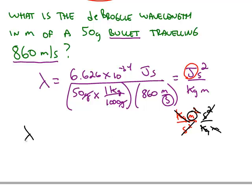We're left with our de Broglie wavelength in meters, and this works out to be 1.54 times 10 to the negative 35th meters.